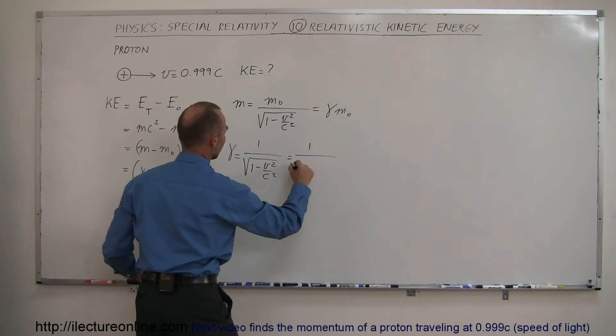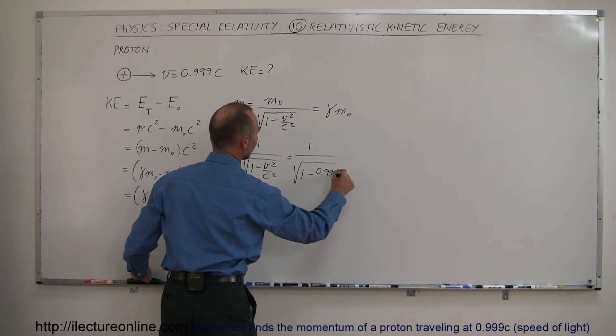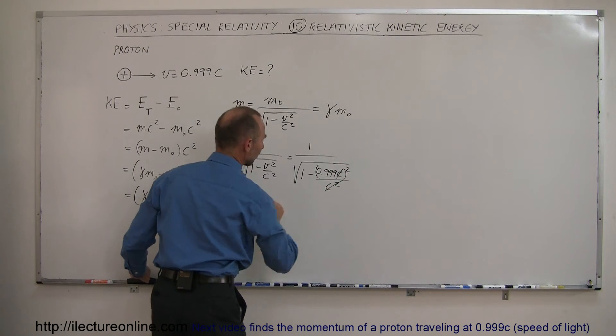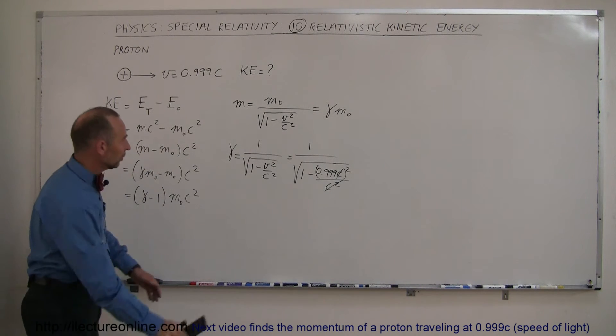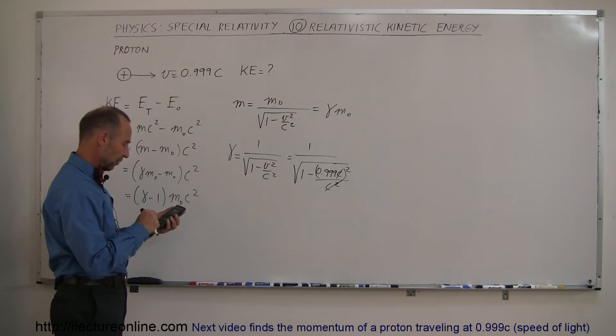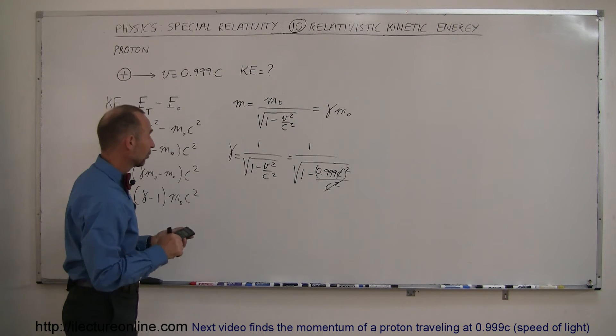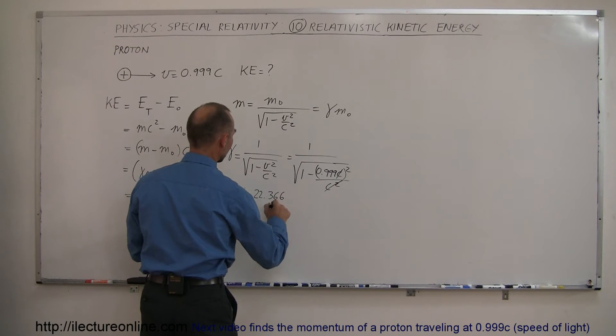So this is equal to 1 over the square root of 1 minus 0.999c. Take that squared, divide it by c squared. Of course, the c cancels out with that. And then my calculator will let us know what gamma is equal to, so 0.999. First we have to square, then subtract that from 1, then take the square root, and then take the inverse of that. And so it turns out that gamma is equal to 22.366.